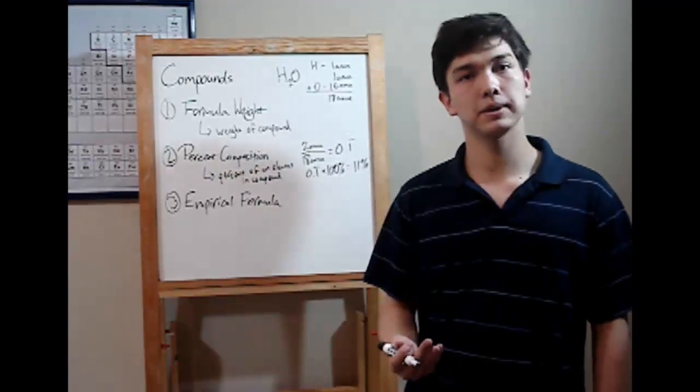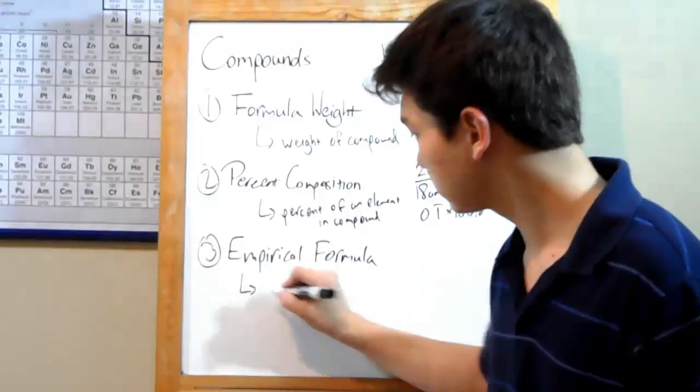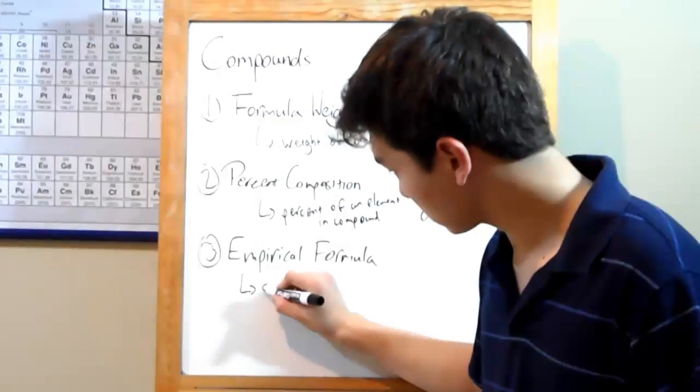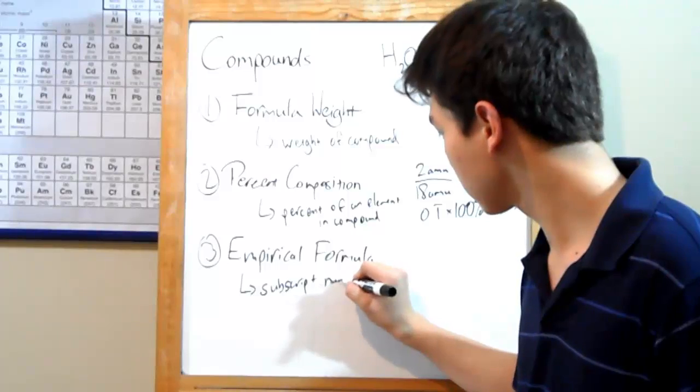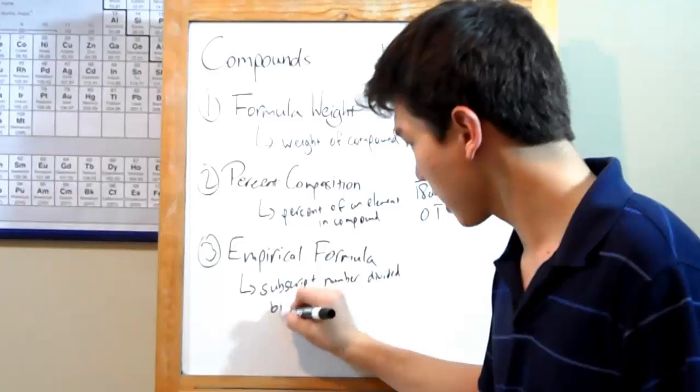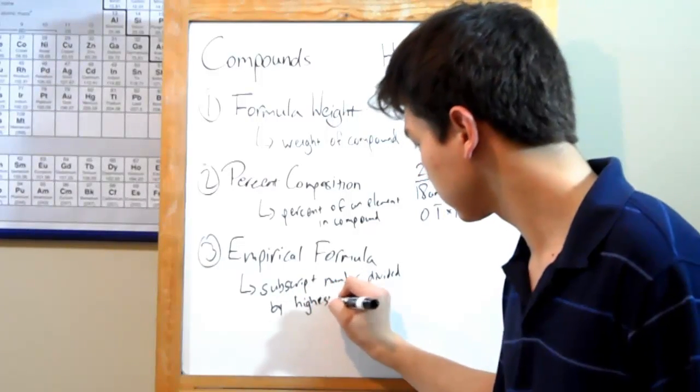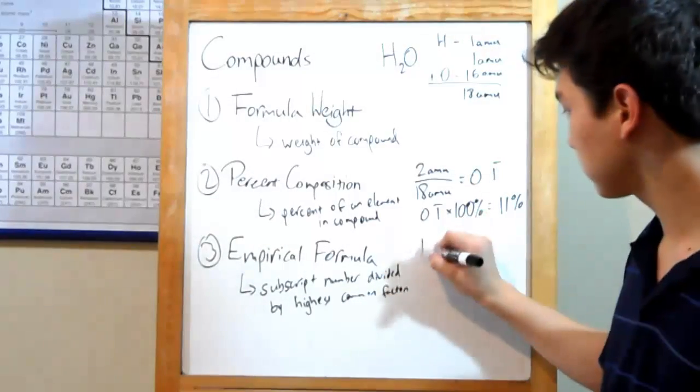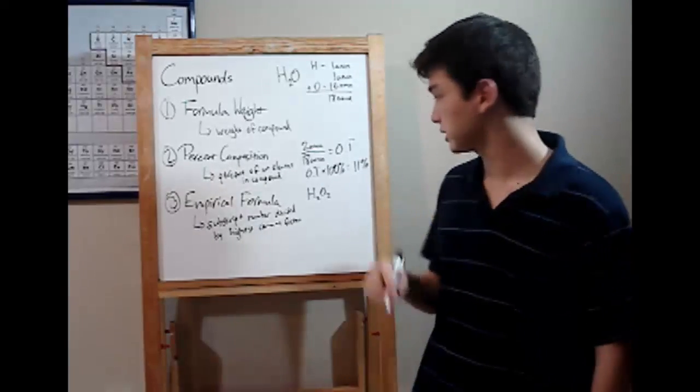Okay. Last thing is the empirical formula. This is really easy to calculate. It's just like simplifying a fraction. Make sure the subscript numbers are divided by the highest common factor. Let me just show this to you. Like, let's say you got H2O2, a step away from water, hydrogen peroxide.